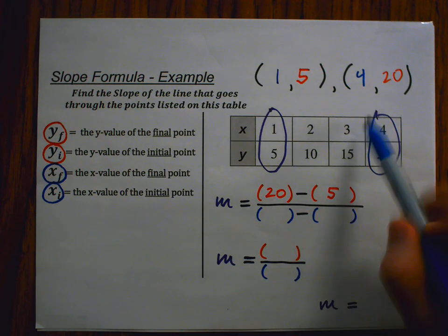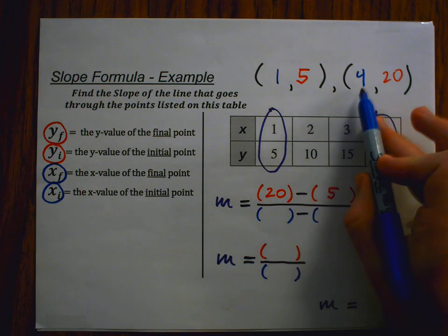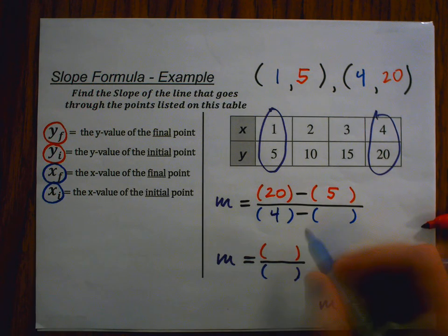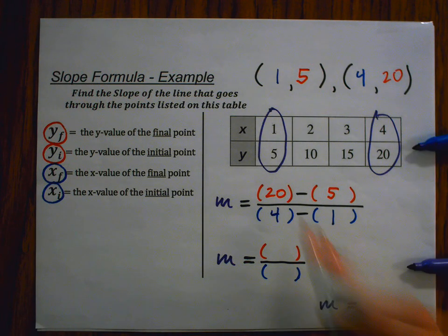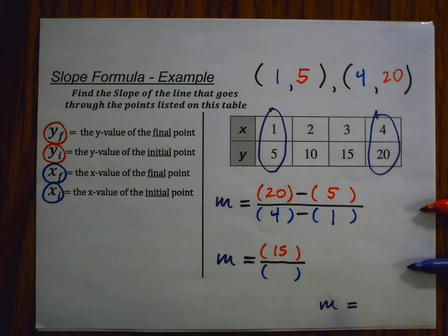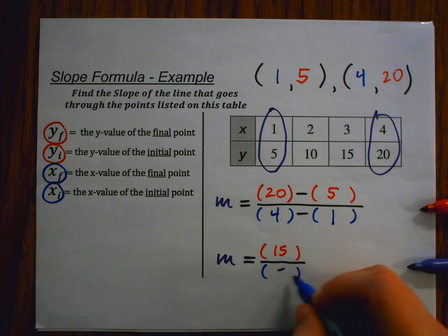Now, let's do x final and x initial. x final is 4 and x initial is 1. 20 minus 5 is 15. 4 minus 1 is 3.